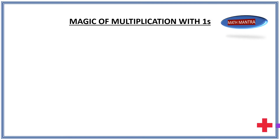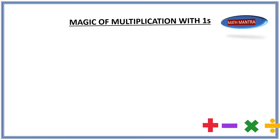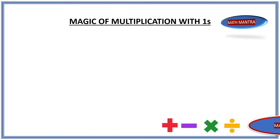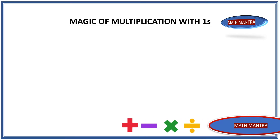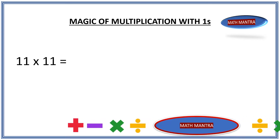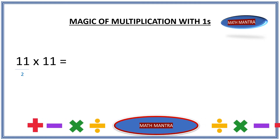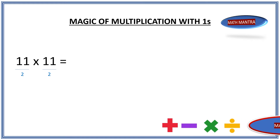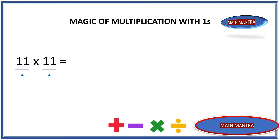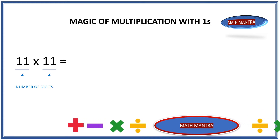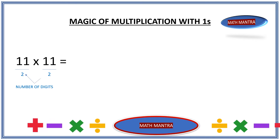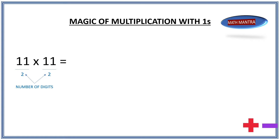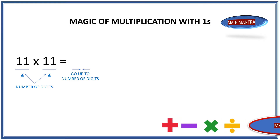Let's start by understanding the pattern with a smaller number and then apply the same pattern to larger number multiplications. So let's start with 11 times 11. The number of digits in 11 is 2, and the number of digits in the other number, which is also 11, is 2. What we do is write the number of digits underneath it — so in this case 2 and 2. Now we start from 1, go all the way up to the number of digits, and then come back down to 1. That's the pattern, as simple as that.